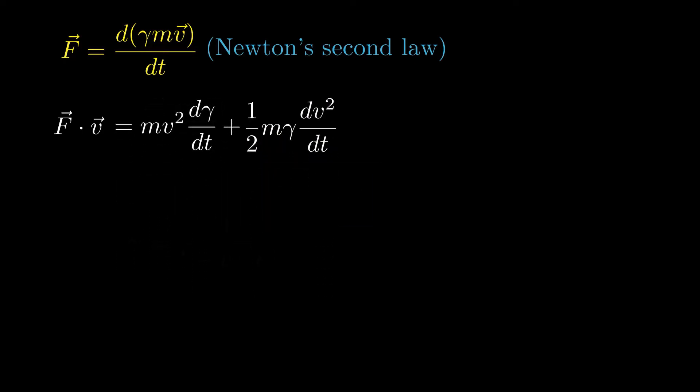Now note that from the definition of the gamma factor, we find that V squared is C squared times 1 minus 1 over gamma squared. Inserting this into the right-hand side gives the following expression for F dot V, which simplifies to MC squared times the time derivative of gamma.